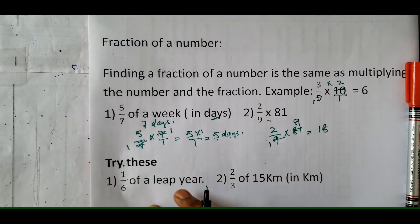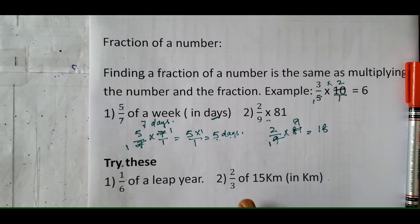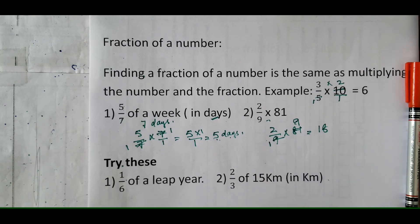I have given you two questions to try. A leap year has 366 days — find 1 sixth of 366, and write your answer in days. And find 2 thirds of 15 kilometers, writing your answer in kilometers. Please try these.